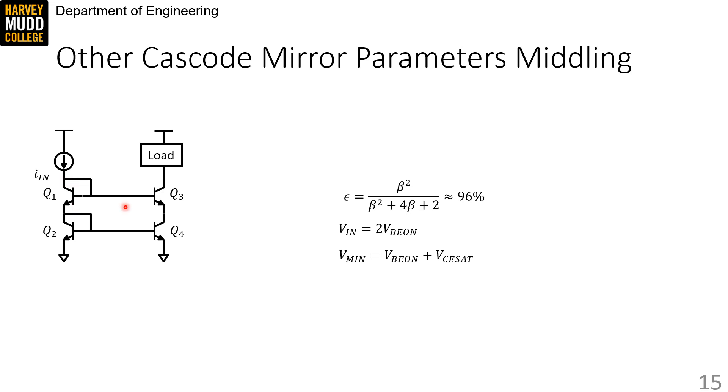V min is a little bit harder to calculate. We know that we need to keep Q3 in forward active, so we need the output voltage to be at least VCE set above Q3's emitter. But Q3's emitter is pinned by Q2, Q1, and Q4. We know that this node is VBE on, this node is 2 VBE on. Dropping back down through Q3's base emitter junction, this node has to be at 1 VBE on.